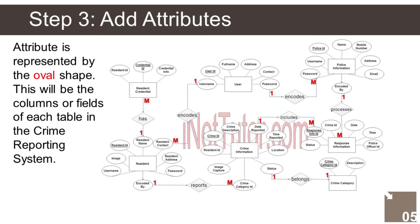The last part of the ERD process is to add attributes to our entities. The User entity has the following attributes: 1. User ID — primary key, represented with underline, 2. Full name, 3. Address, 4. Contact, 5. Username, 6. Password.